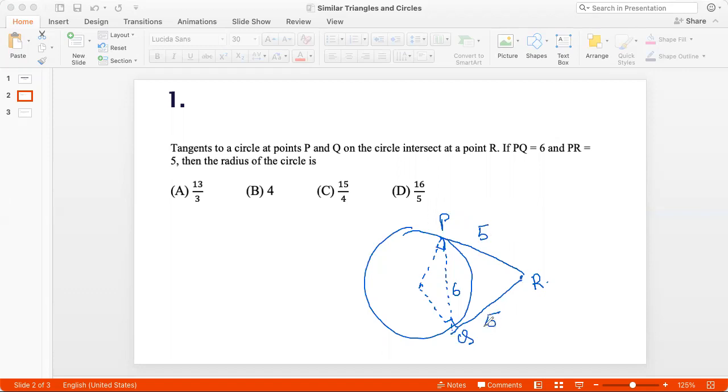So RQ will also be 5 because tangent lengths from a common point are equal. Then what is the radius of the circle? If I draw the line OR where O is the center of the circle, then I can see that triangle OPR is congruent to triangle OQR, right? Because by the property of SAS, also by the property of RHS, this angle and this angle is 90 degrees. If that is the case, then if we call this point M, then PM and MQ will be equal when each of these will be 3.